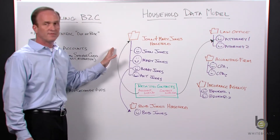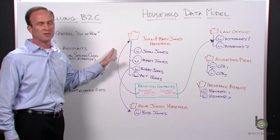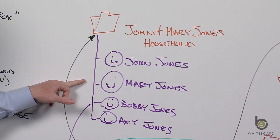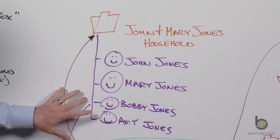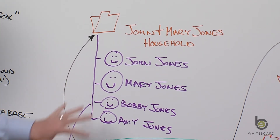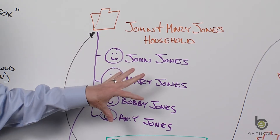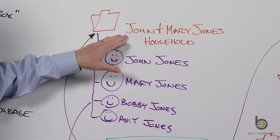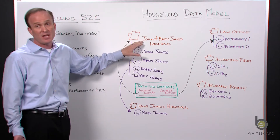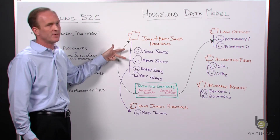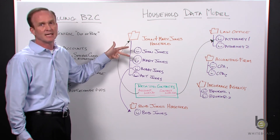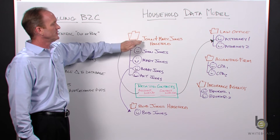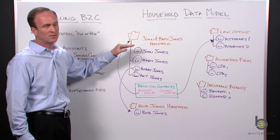On the left, I've created what I'm calling a household account. Underneath that, I have contacts: John Jones, Mary Jones, and their two kids, Bobby Jones and Amy Jones. I am nesting people who live at this physical address and make up the entity called the John and Mary Jones household. The naming convention uses the primary and secondary contacts — first name, first name, last name — so: John and Mary Jones household.